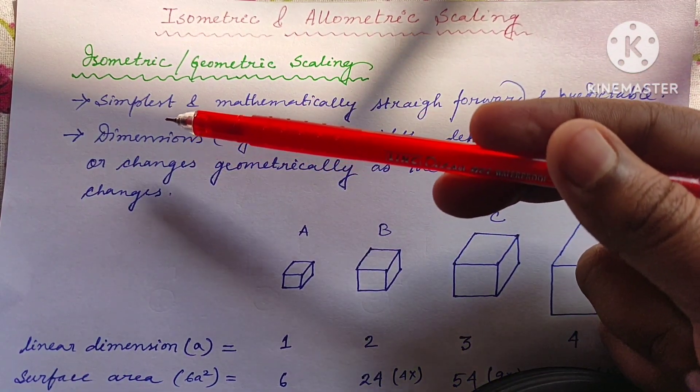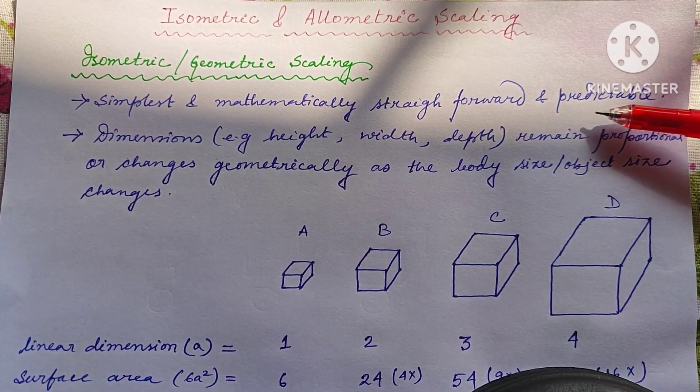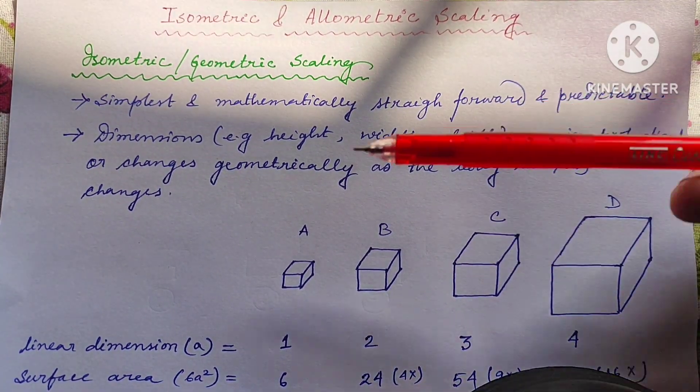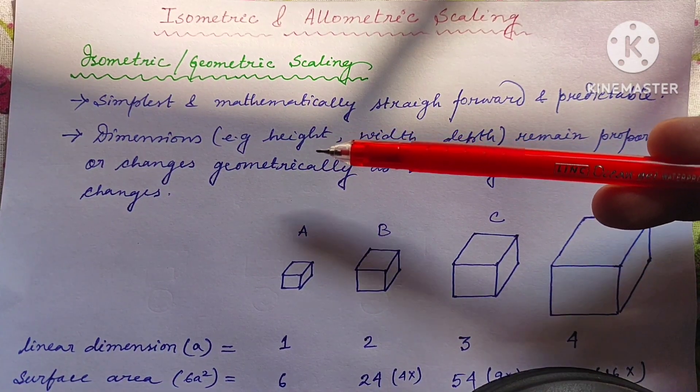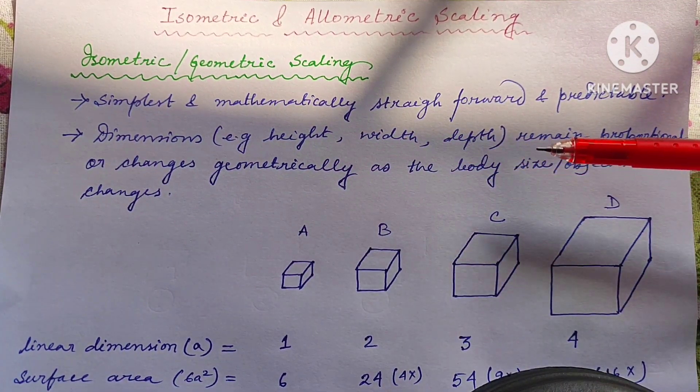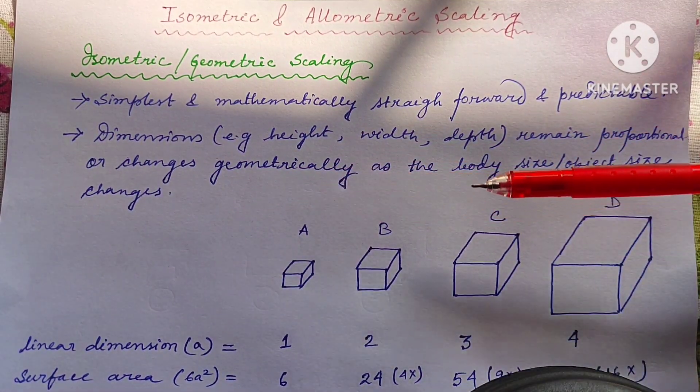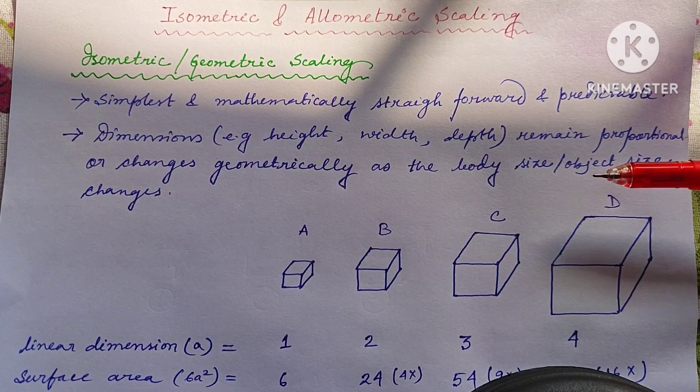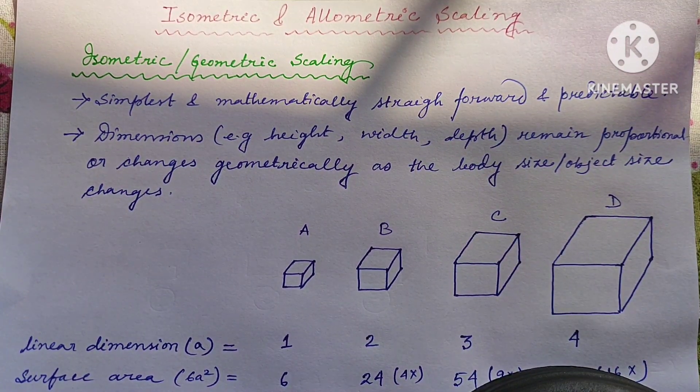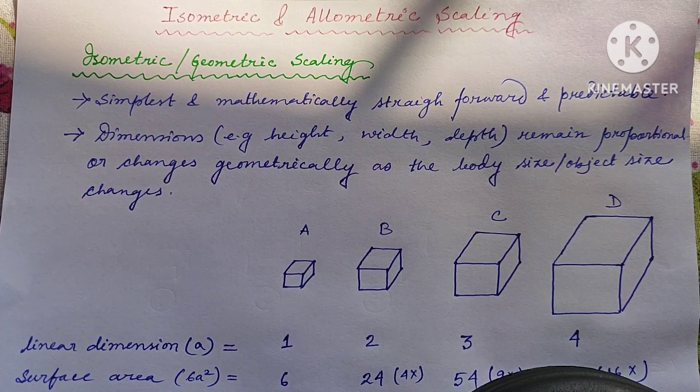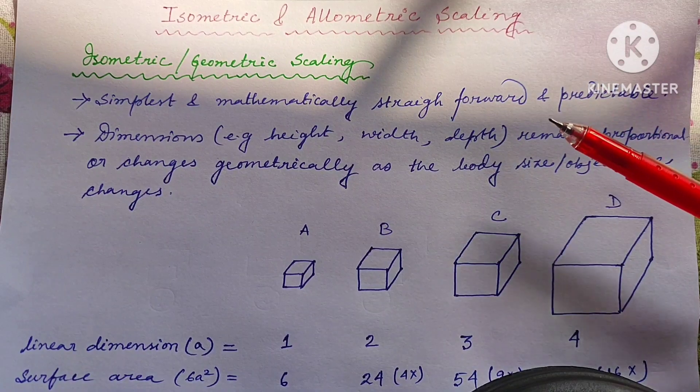It is the most simplest form of scaling which is mathematically straightforward or formula based and hence it is predictable. Here you can see different dimensions of any object like height, width or depth remain proportional or changes geometrically as a change in overall body size or object size. So all the dimensions of any object actually changes geometrically to its overall body size.